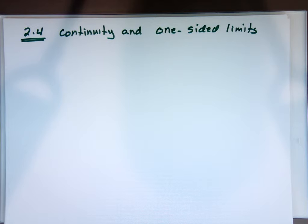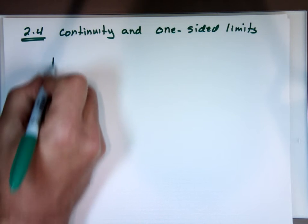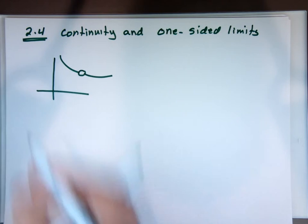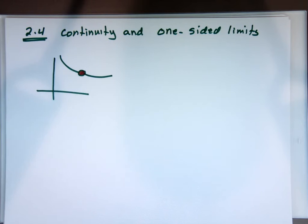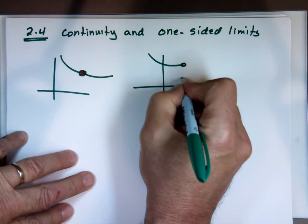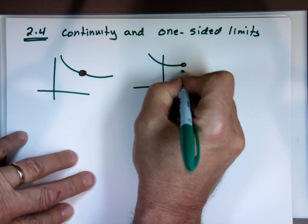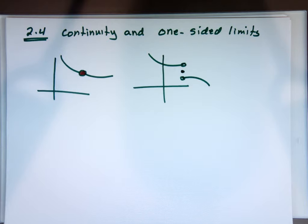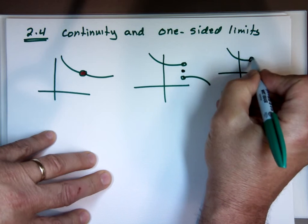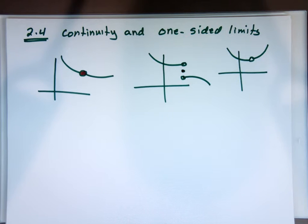This section covers whether a function is continuous, and also one-sided limits. Now graphically, if I gave you a function with a hole in it, and we say at this value the value is defined here — is this function continuous? Yes. Is this function continuous? No. Is this function continuous? No, there's a hole in it.